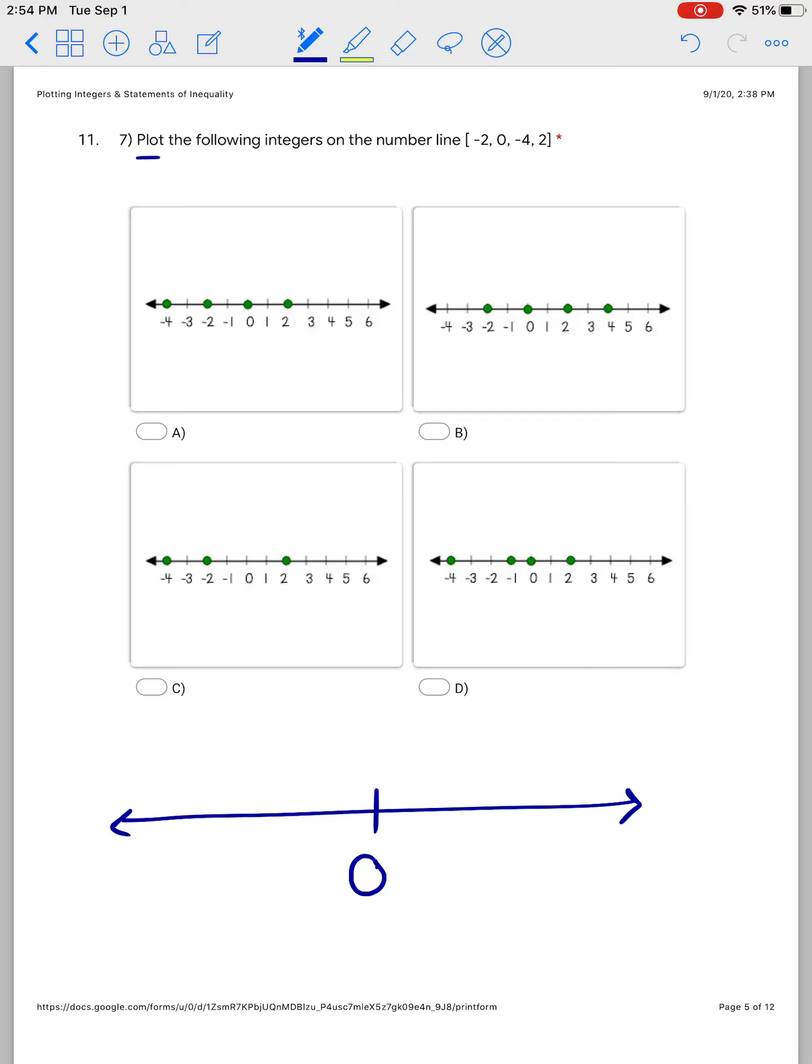For the first one, negative 2, I would put on my number line. Here's my negative 2 and I would do the same thing for 0, negative 4, and 2 and then pick whichever answer choice number line matches my number line.